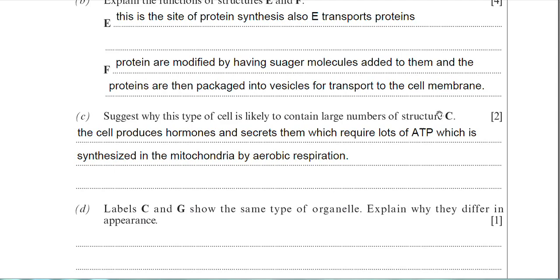There's my answer there for part C, and as we'll see when we look at the mark scheme, there are a couple of other options you could have put into your answer there. But I've just said the cell produces hormones and secretes them, which requires lots of ATP. Both those processes are ATP-dependent. I've then said, which is synthesized in the mitochondria by aerobic respiration. So I've linked there the need for ATP with the fact that it's actually made and synthesized in the mitochondria by aerobic respiration. And that's why you need lots of mitochondria in cells that undergo secretion.